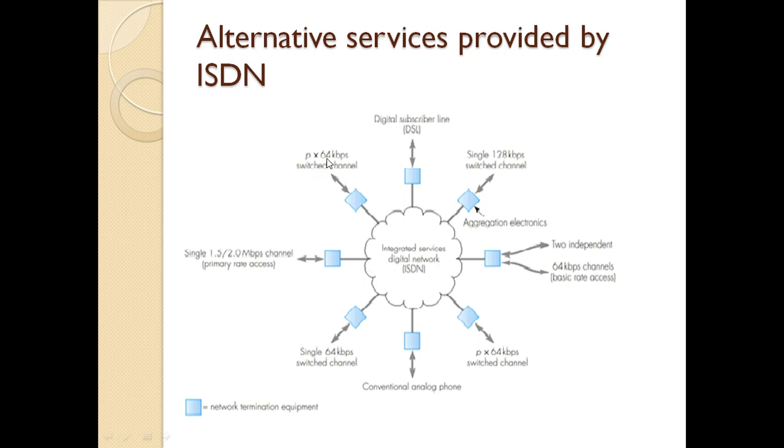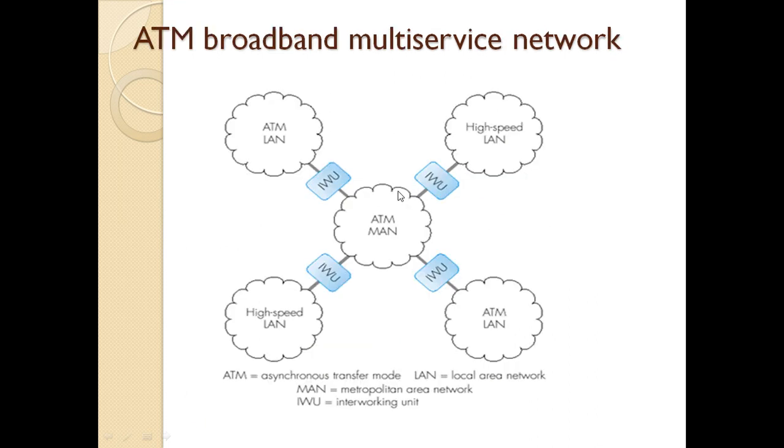We have this P into 64 KBPS switched channel, where this P will vary from 1 to 30. So between 64 KBPS and 2 MBPS, if you want any services that offer the bit rate in between those two, you can use these channels varying P from 1 to 30.